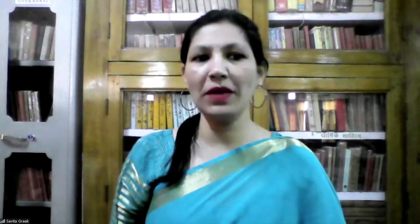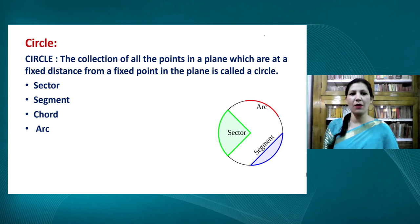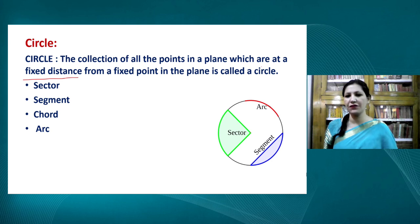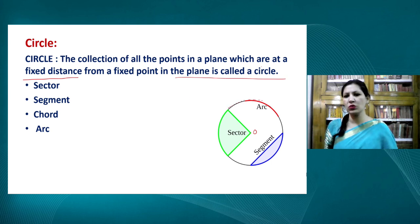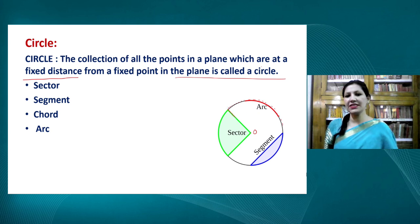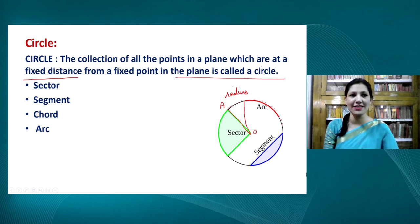First of all, what do we mean by a circle? The collection of all the points in a plane which are at a fixed distance from a fixed point is called a circle. As in the figure, this is a fixed point, let us name it as point O. All points at a fixed distance from point O form the circle. This fixed distance is known as the radius of the circle. Twice the radius is known as the diameter of the circle.